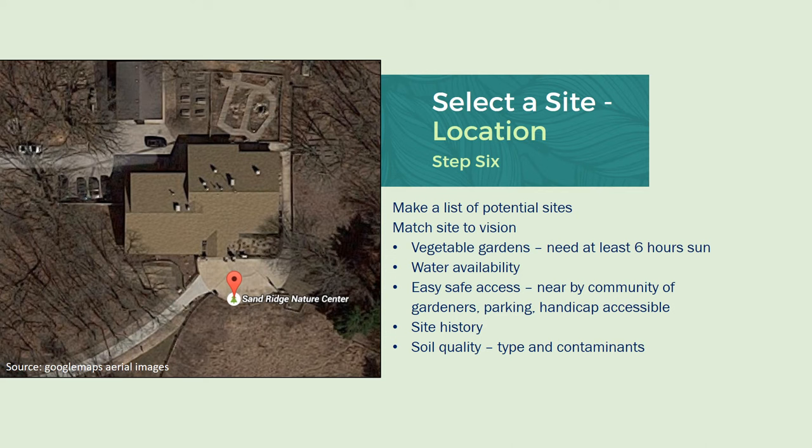Also consider what the site history is. Was it a dumping ground? Is it too hilly? Do you have permission to use the land? Consider all those things. You could also look at aerial maps of your location — this is a good way to plot out your garden using aerial photographs.